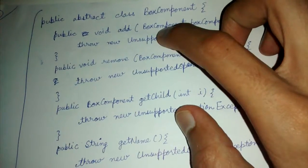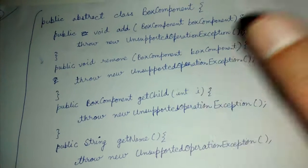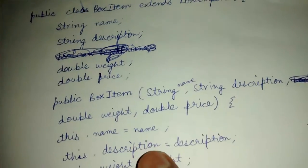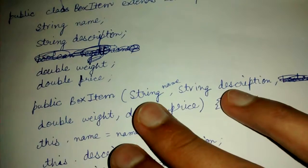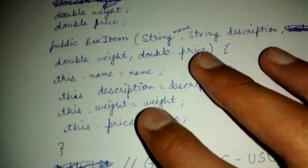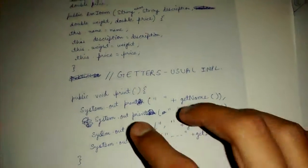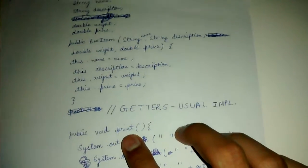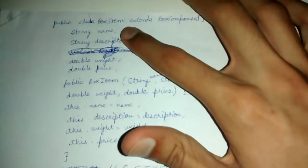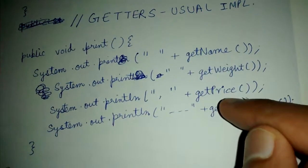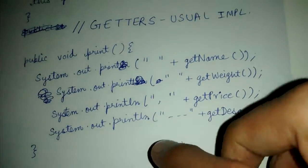Composite will override the add method while leaf will use it as-is. Now let's look at the BoxItem class, which represents a leaf box — a single item. In BoxItem, the name, description, weight, and price are initialized in the constructor, and the getters are defined. Only the print method is overridden; add and remove don't make sense for a BoxItem. The print method prints the name, weight, price, and description of the leaf box.